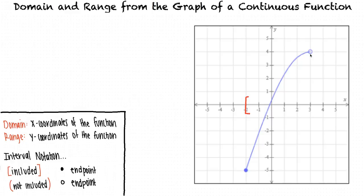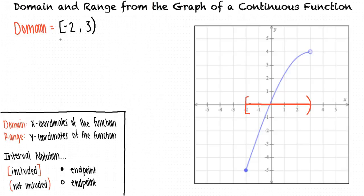The rightmost x-coordinate is 3; however, this endpoint is an open circle. This means that the x-coordinate 3 is not actually included in the domain, but the x-coordinates get infinitely close to 3 without ever being 3, so we'll use a parentheses. Between x-coordinates negative 2 and 3, there are no holes or breaks in the function, so the domain includes all values greater than or equal to negative 2 and less than 3. We write this in interval notation as [−2, 3).